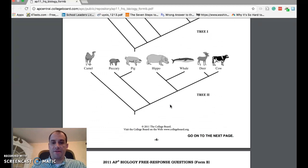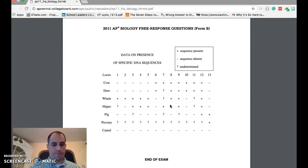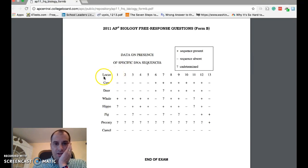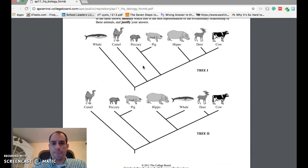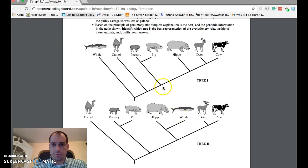Let's look at the molecular evidence. Molecular evidence is here. This is cow's molecular evidence, deer's molecular evidence, whale's molecular evidence, hippo, pig, peccary, camel, etc. What I want to show you is the difference between the whale and the hippo and the difference between the hippo and the pig.